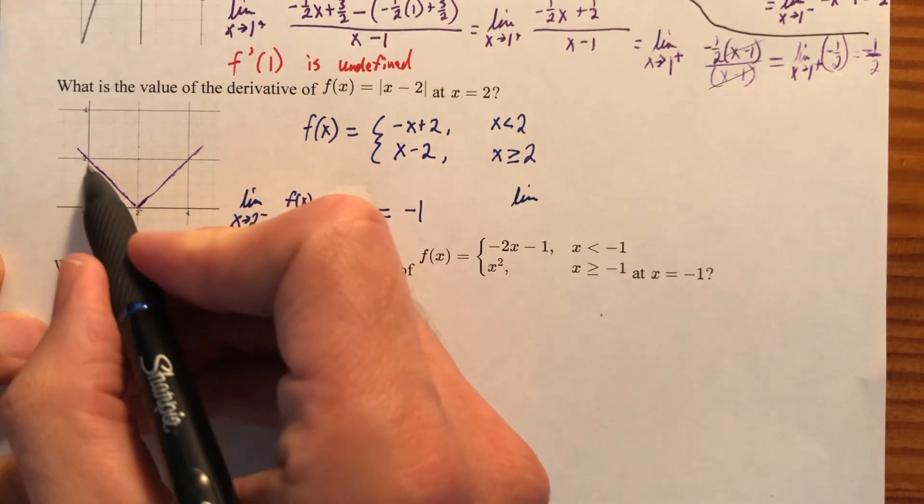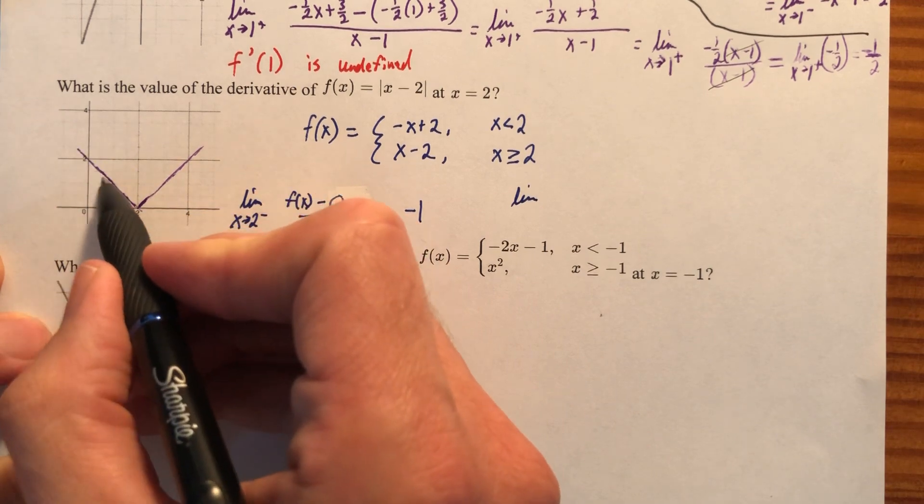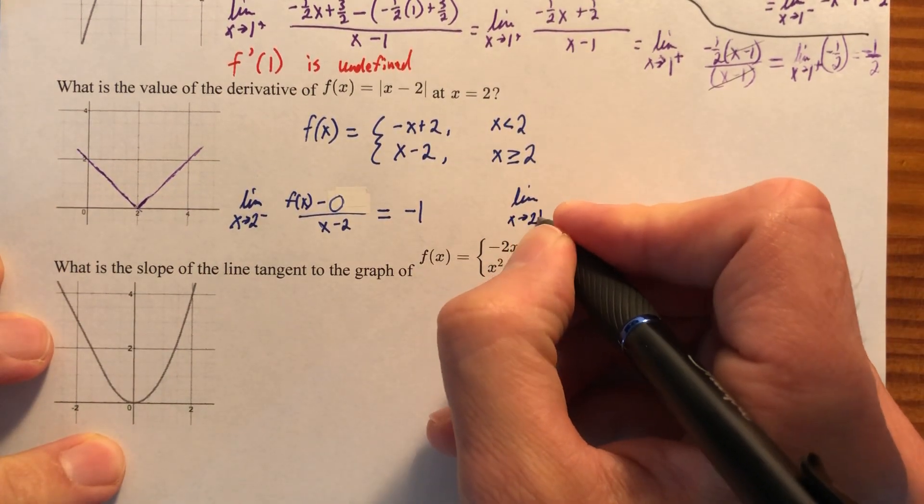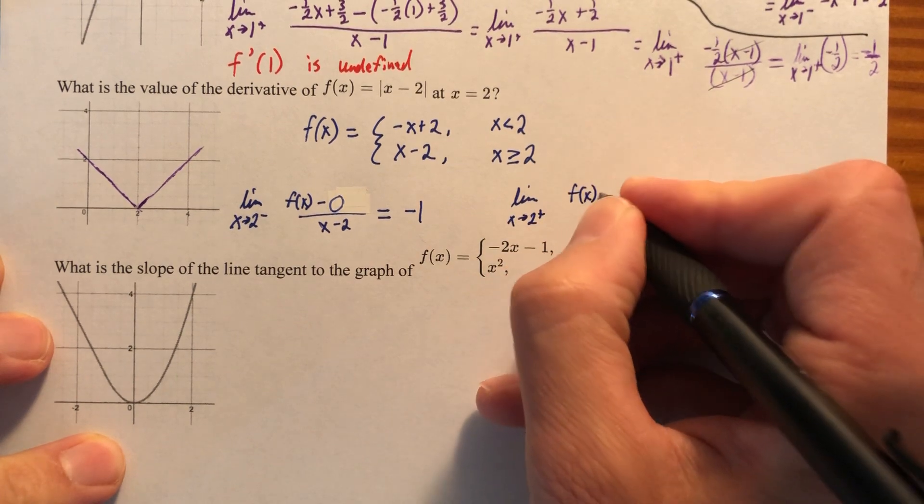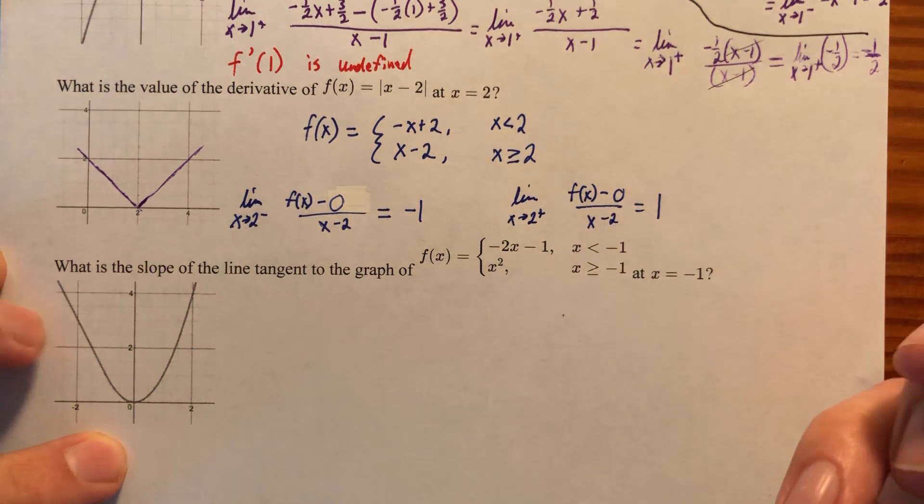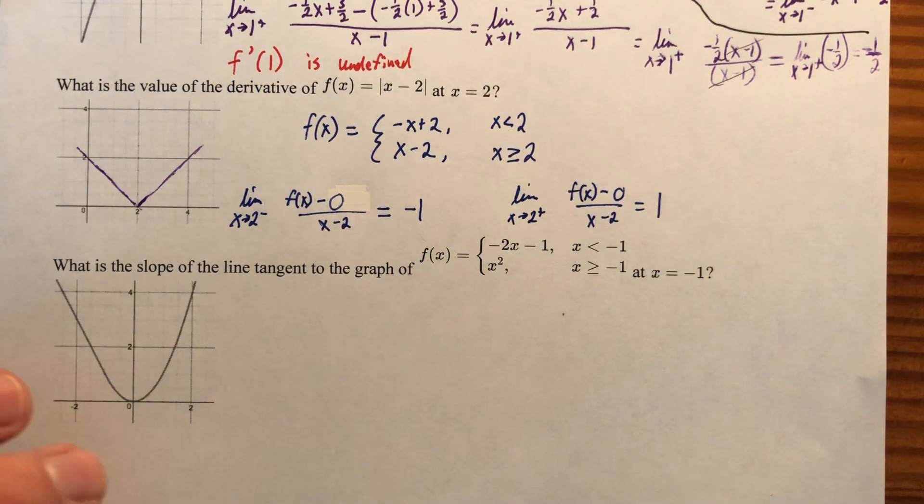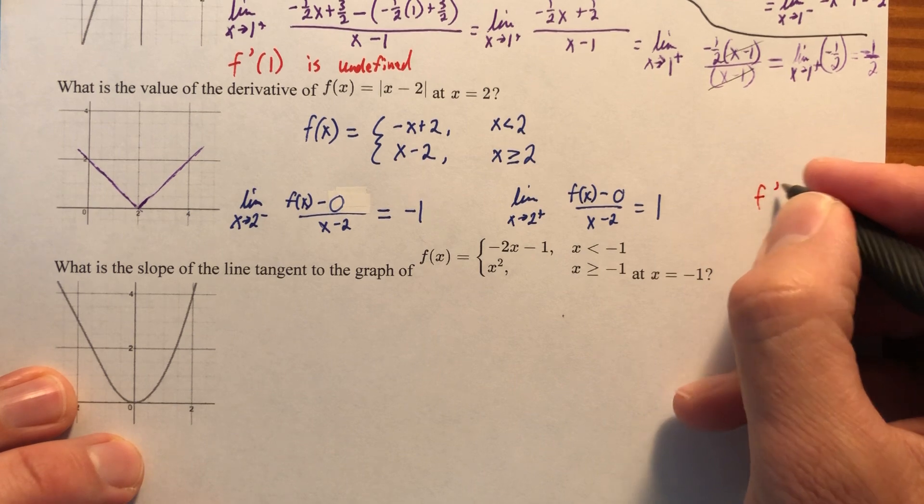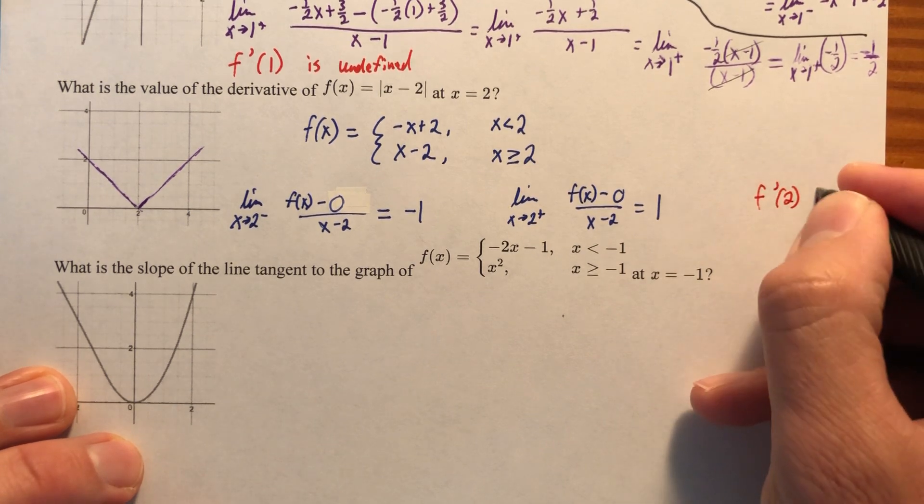The slope at that point coming in from that side, so the slope of this piece coming in here. So the slope of this piece coming in from the other side, f of x minus also zero, x minus 2 is going to be equal to positive one. And therefore, we'll write it in red one more time. The value of the derivative at 2 is undefined.